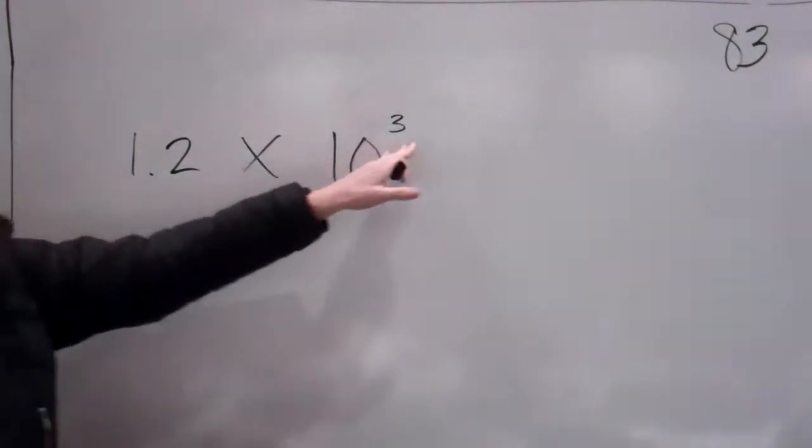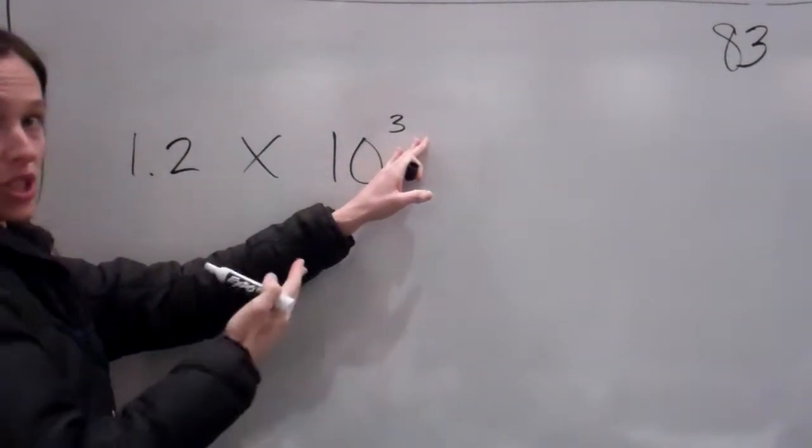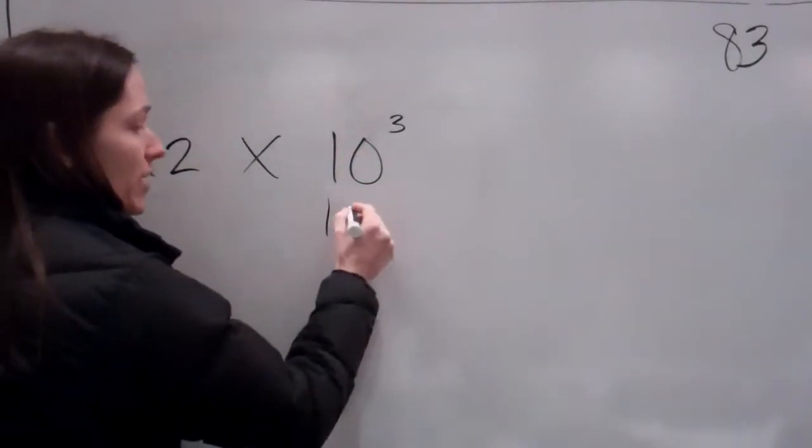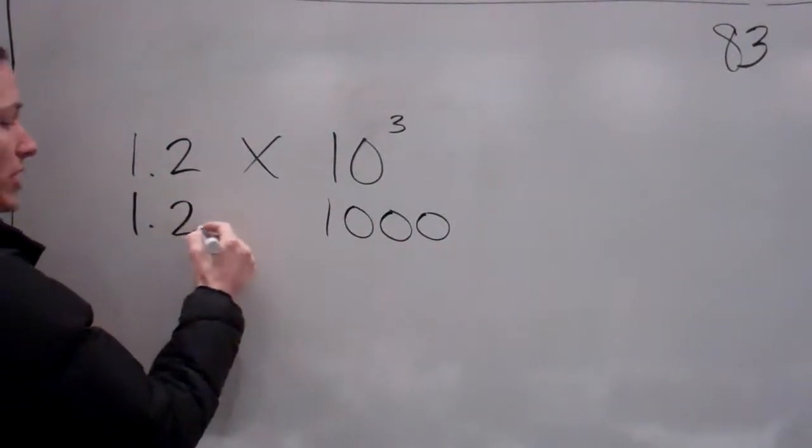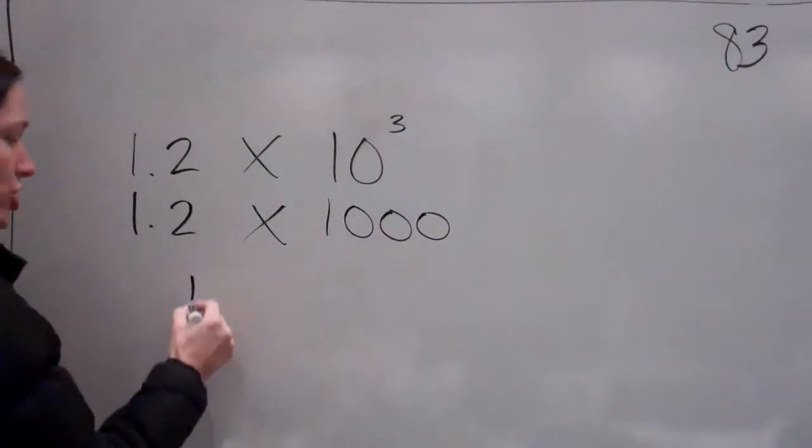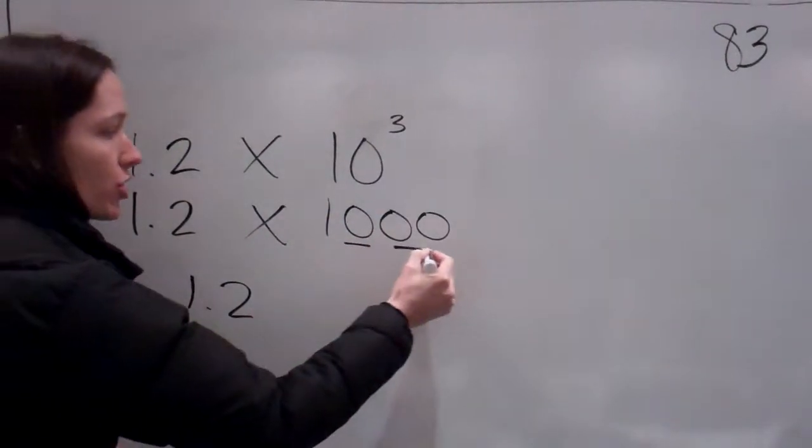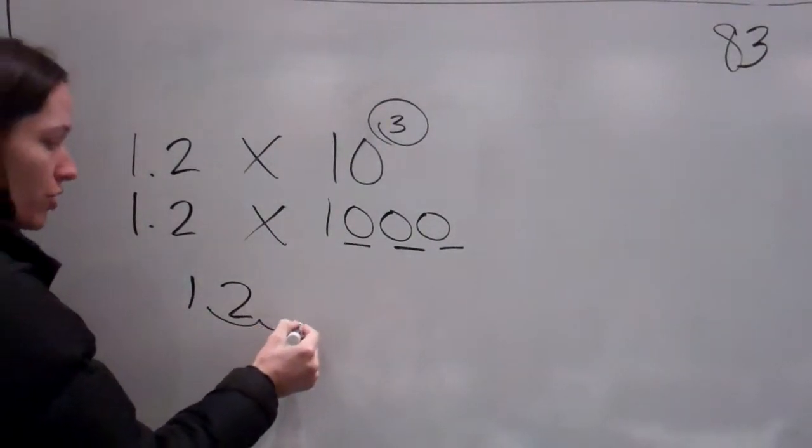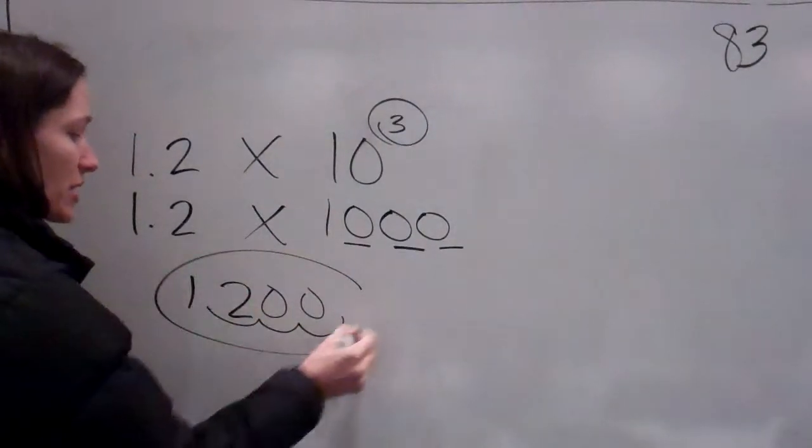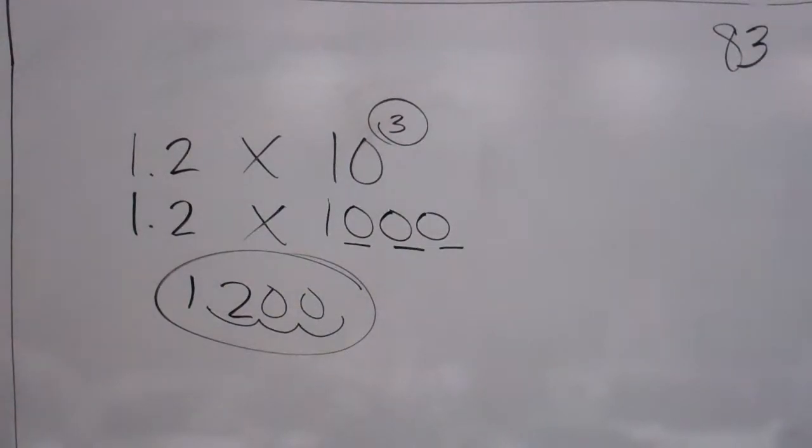Because 10 times 10 times 10, which is 10 to the third power, is actually three zeros. Everybody remember that? Then 1.2 times that, we would just move the decimal 1, 2, 3 times, or you can just look up there. So 1, 2, 3. So the answer to this problem would be 1,200. Everybody understand that? Everybody remember that?